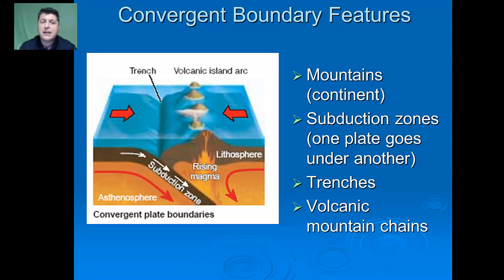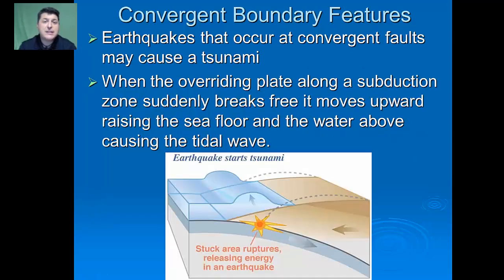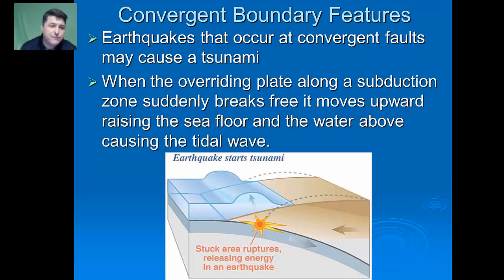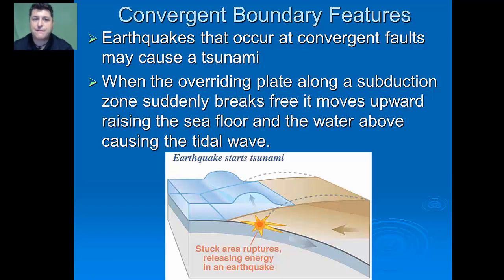Another feature that can form at convergent plate boundaries is volcanic mountain chains. Sometimes at these convergent boundaries, especially where continental and oceanic plates meet, the resulting earthquake can also trigger a subsequent tsunami. When the overriding plate along the subduction zone experiences friction and gets caught up as it's subducting, when it suddenly breaks free, it moves upward — raising the sea floor and the water above it. This displaces a large amount of water and energy, forming a tidal wave.